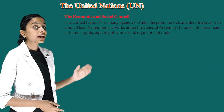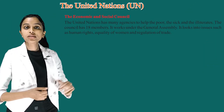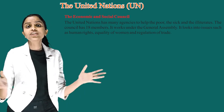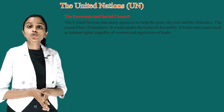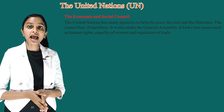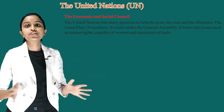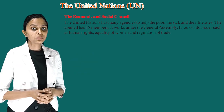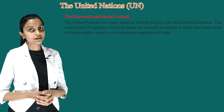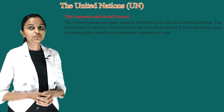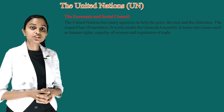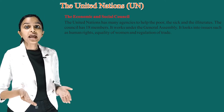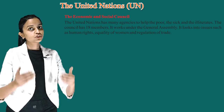The fourth is the Economic and Social Council. The United Nations has many agencies to help the poor, sick and illiterate. The Council has 18 members and works under the General Assembly. It looks into issues such as human rights, equality of women and regulation of trade.